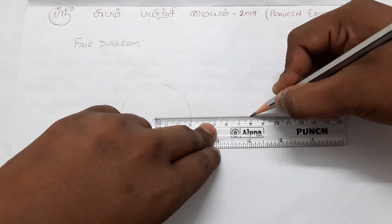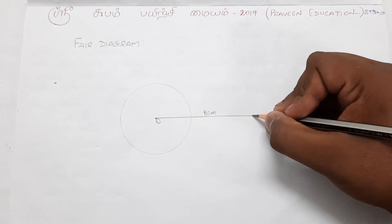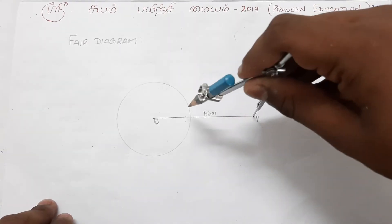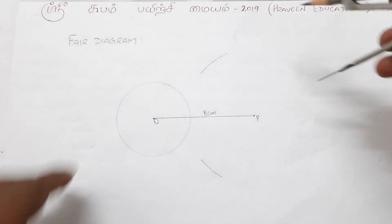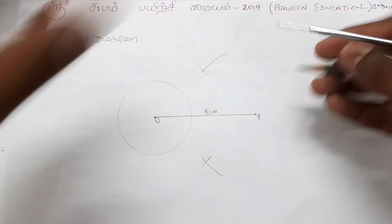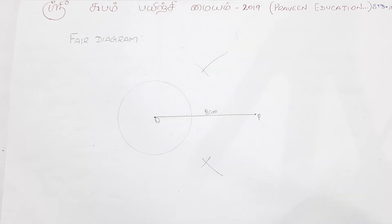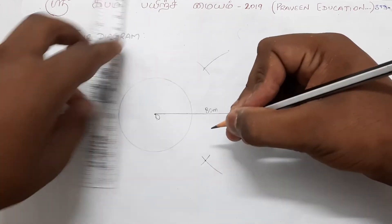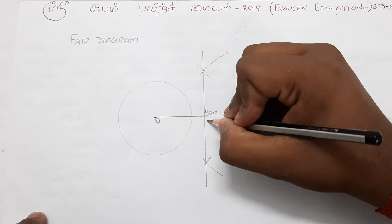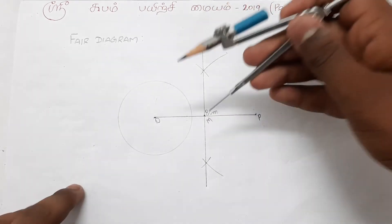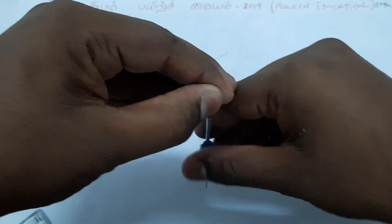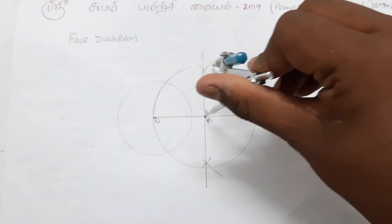Draw a line of 8cm. This line is 8cm — from the center point O to point P. Now let's check the center point. We have M as the midpoint. Make a circle with center M and radius MO.